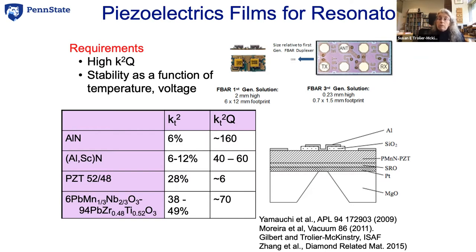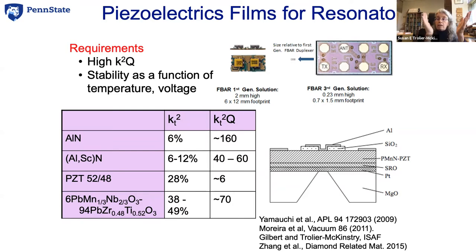The key figure of merit for that application describes how efficiently you can convert between electrical and mechanical energy — the K-squared term — and the quality factor of the resonator, which says how long something rings after an impulse. Striking a bell produces many reverberations and a pure tone; clapping hands produces one immediate dampened sound. Aluminum nitride, kind of a terrible piezoelectric but with a really high mechanical quality factor, is the champion material for that filter application.